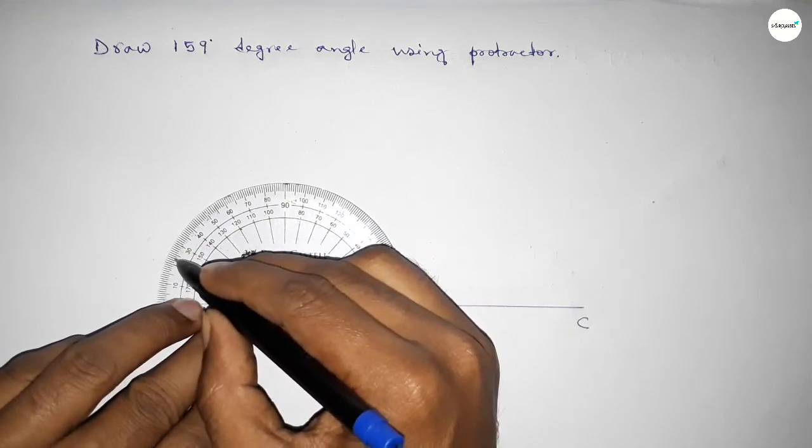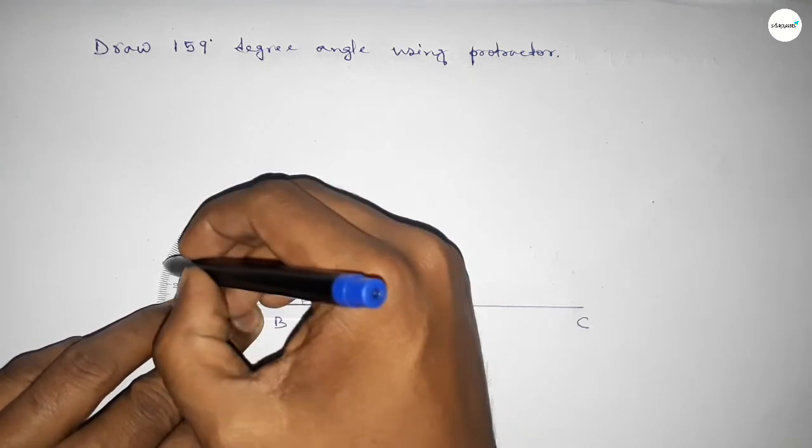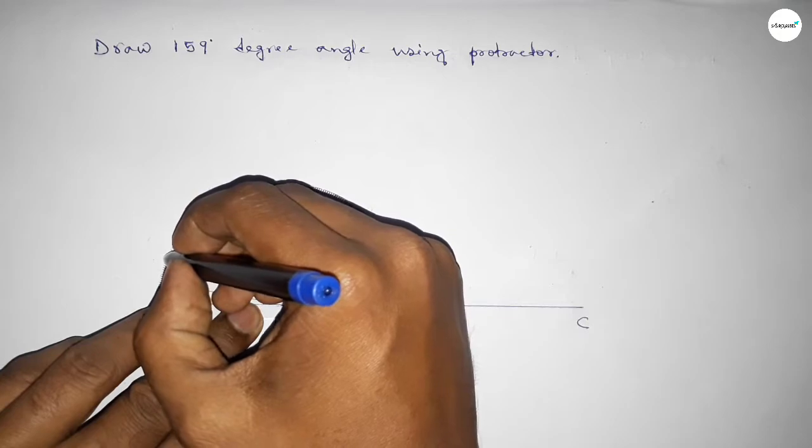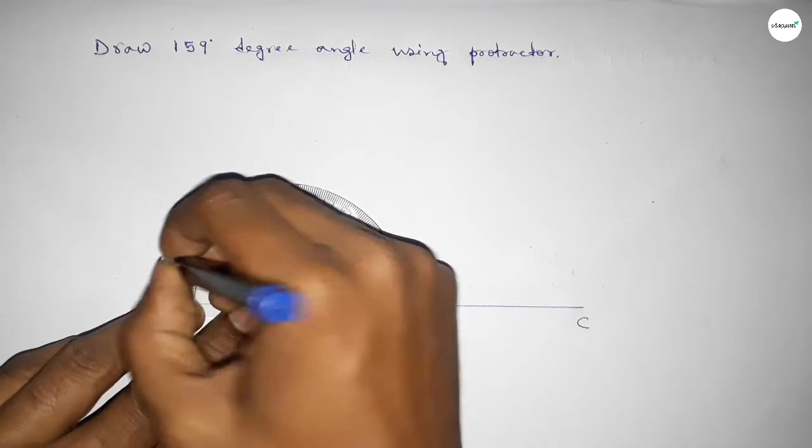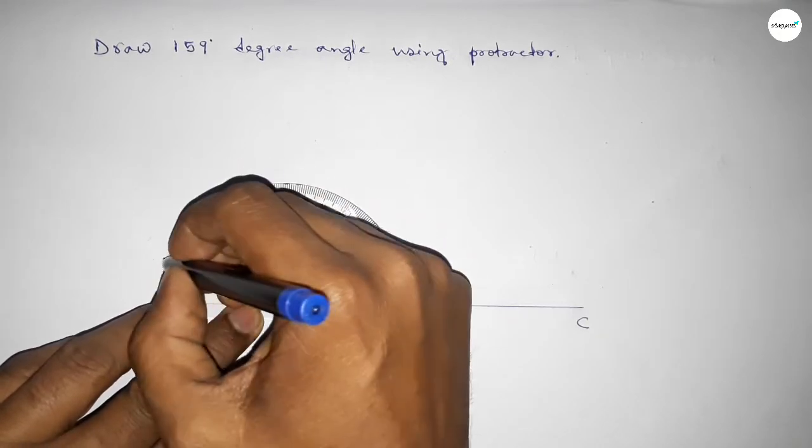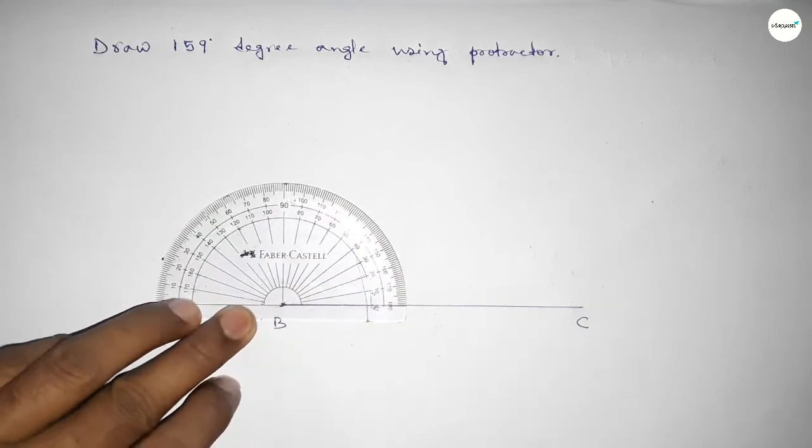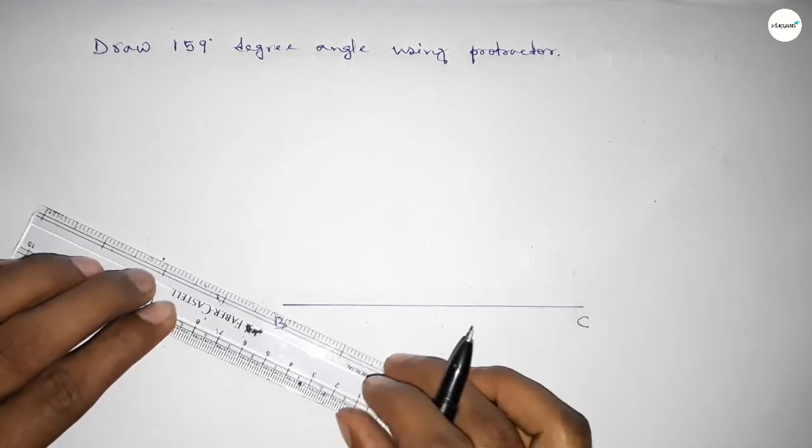150, 155, 156, 157, 158, 159. So this is 159 degrees. Now we have to join this to get the 159 degree angle.